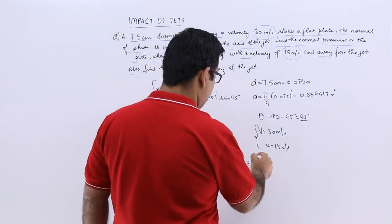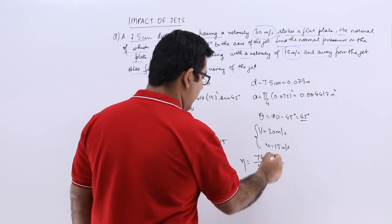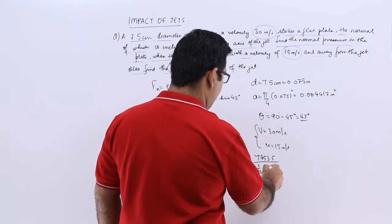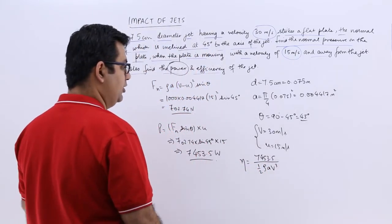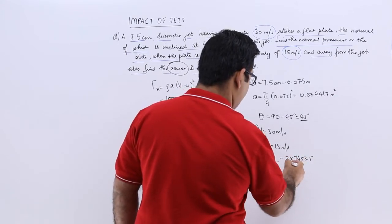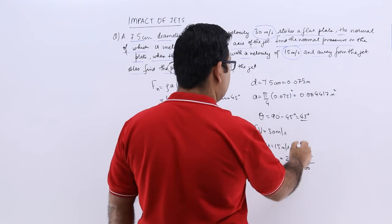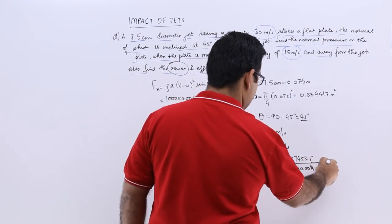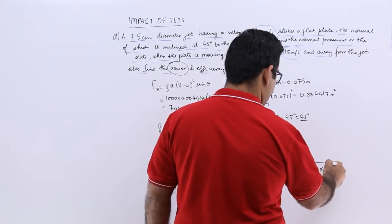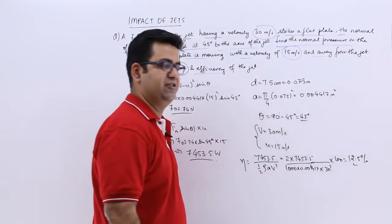The efficiency is 7453.5 divided by the kinetic energy, which is half m-dot V squared. The mass flow rate gives you rho A V, so the kinetic energy becomes half rho A V cubed. This gives 2 into 7453.5 divided by 1000 into 0.004417 into 30 cubed. Multiplying by 100, you get 12.5% as the efficiency of this jet.